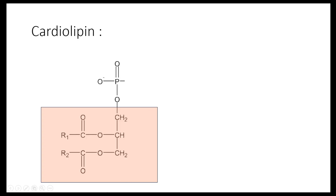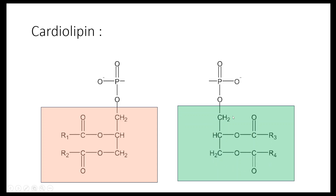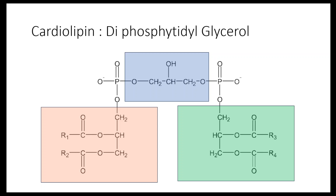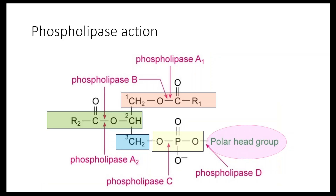Cardiolipins: first identify the structure — two fatty acids and a glycerol with a phosphoric acid makes a phosphatidic acid. Two such phosphatidic acid units are esterified to the OH groups of a central glycerol molecule. Putting these together gives diphosphatidylglycerol, which is cardiolipin. Cardiolipin is an integral part of many cell membranes, especially in the mitochondria.